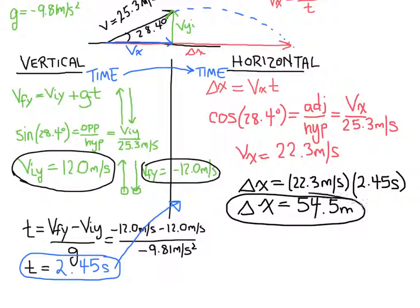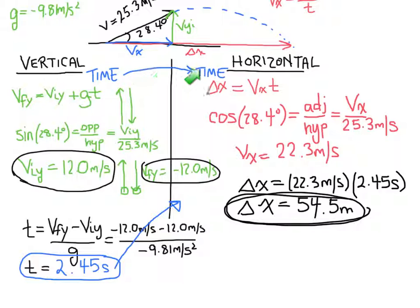That's our final answer — 54.5 meters is how far the ball traveled before it hit the ground. To recap: when dealing with projectile motion at an angle, split the velocity into a vertical component and a horizontal component. Use the vertical component with the first equation of motion to solve for time. Once you have time, transfer it over to the horizontal component to find the horizontal distance.